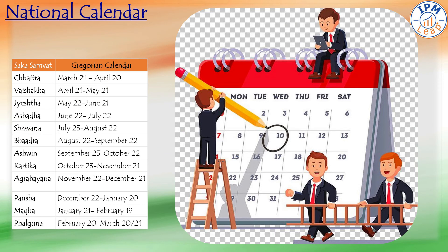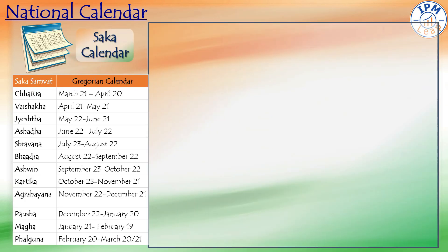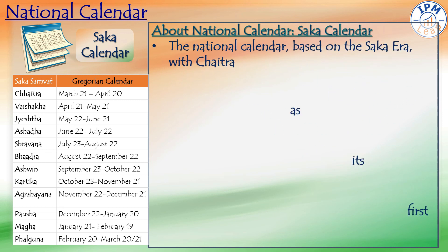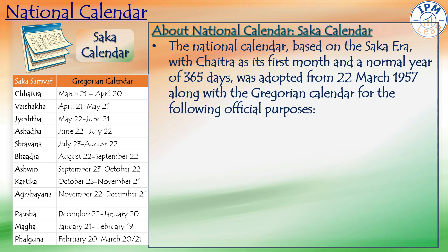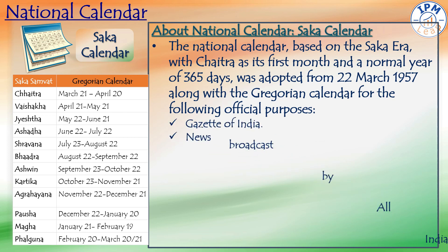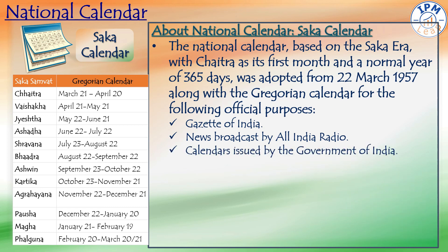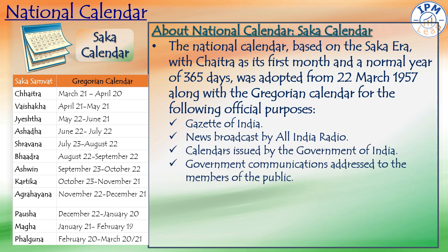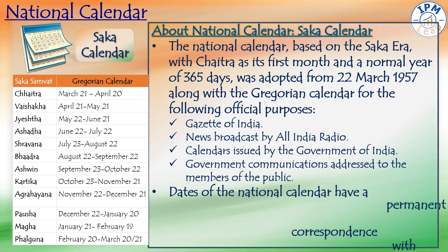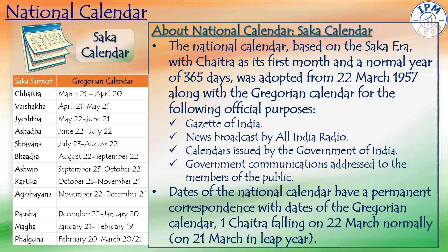Finally, we have the national calendar — the Saka Calendar. The national calendar based on the Saka era, with Chaitra as its first month and a normal year of 365 days, was adopted from 22 March 1957 alongside the Gregorian calendar for official purposes including the Gazette of India, news broadcasts by All India Radio, calendars issued by the Government of India, and government communications addressed to the public. Dates of the national calendar have a permanent correspondence with dates of the Gregorian calendar, with 1st Chaitra falling on 22 March normally and on 21st March in leap years.